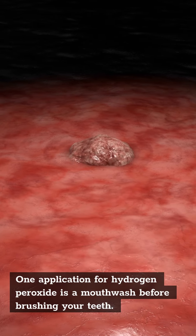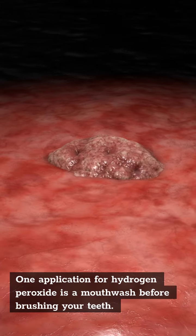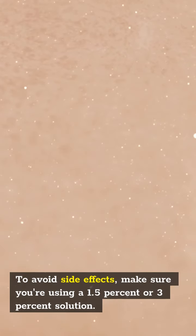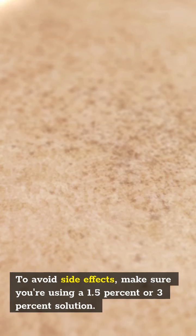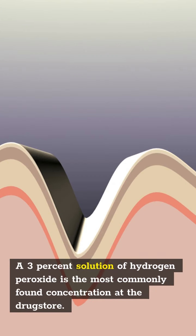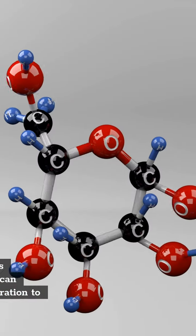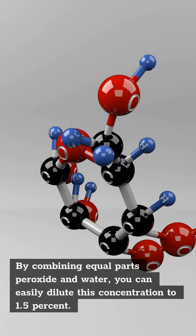One application for hydrogen peroxide is a mouthwash before brushing your teeth. To avoid side effects, make sure you're using 1.5% or 3% solution. 3% solution of hydrogen peroxide is the most commonly found concentration at the pharmacy. By combining equal parts peroxide and water, you can easily dilute this concentration to 1.5%.